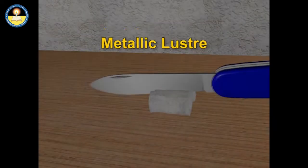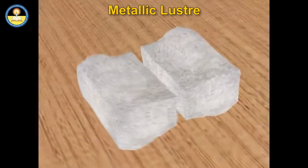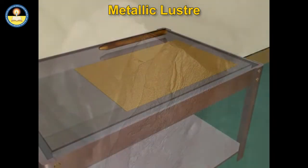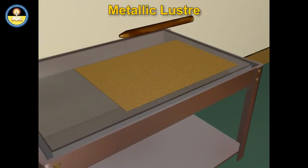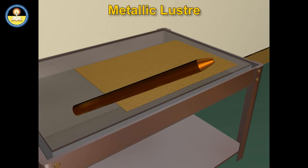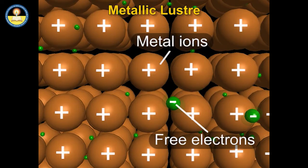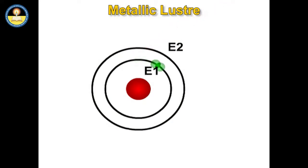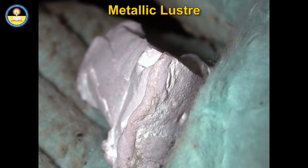If we observe a freshly cut surface of metal, we will notice that it has a shining appearance. This is called metallic luster. When we rub the surface of a clean copper rod with sandpaper, we find that copper has a shiny surface. So we conclude that all metals have a shiny surface and can be polished. This shine is due to the presence of free electrons in them. Free electrons absorb light and jump to a higher orbit; when they come back to their original orbit, they emit radiation.